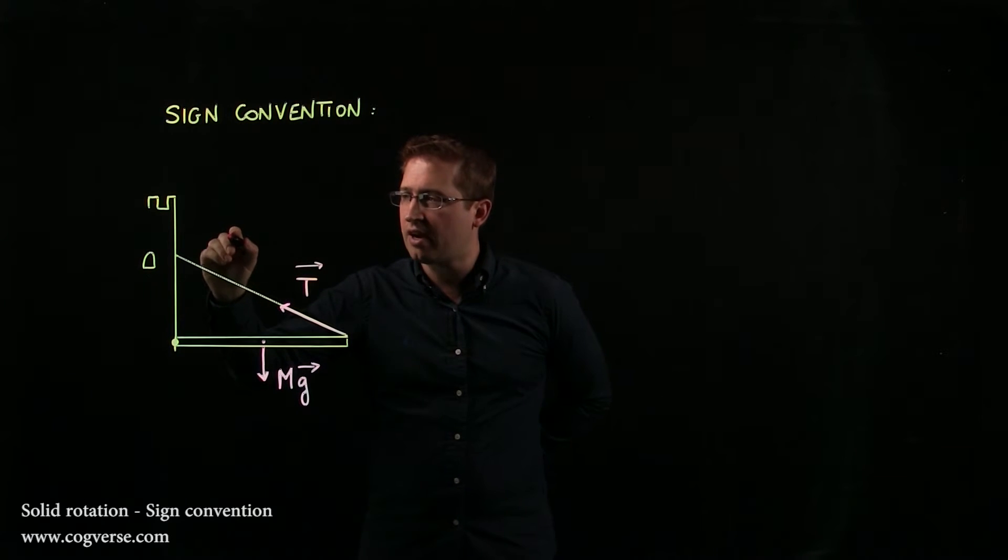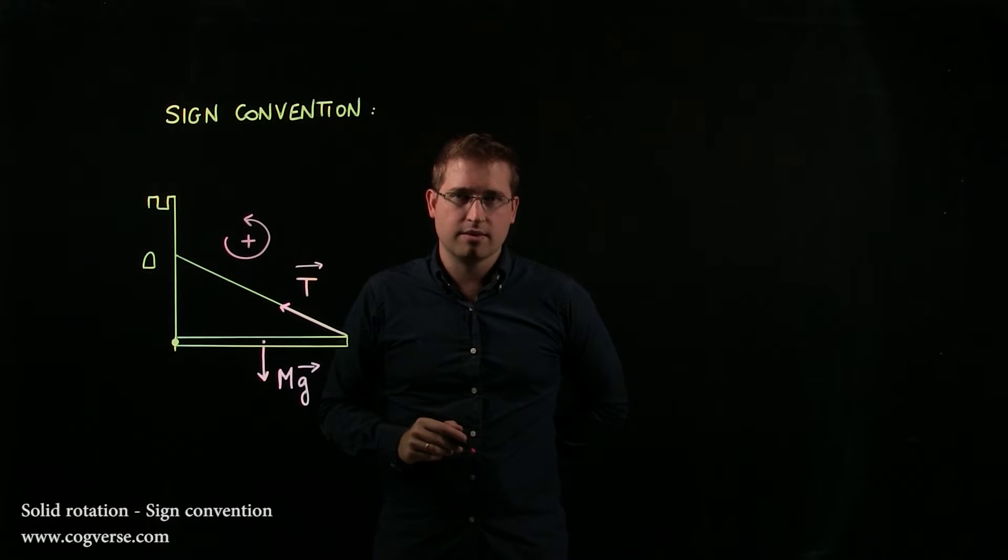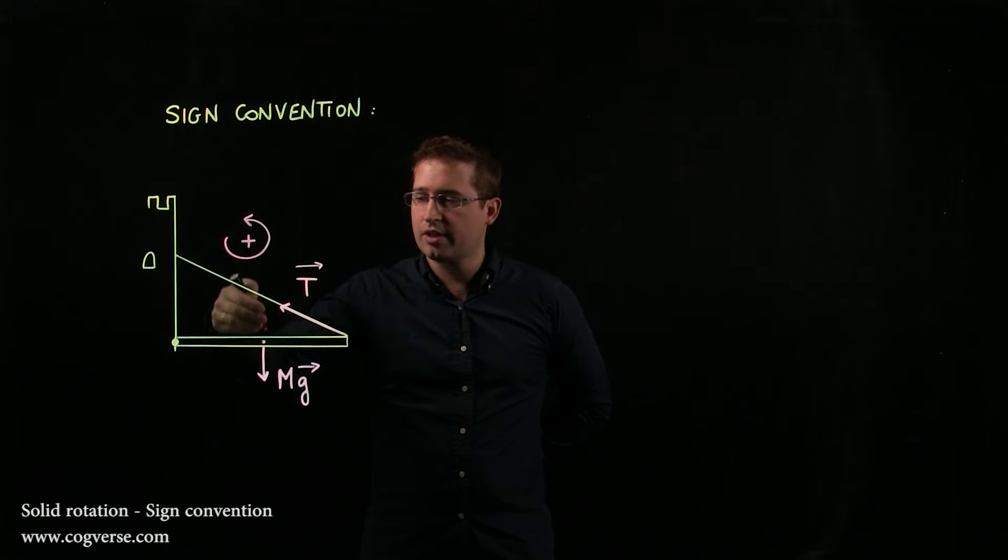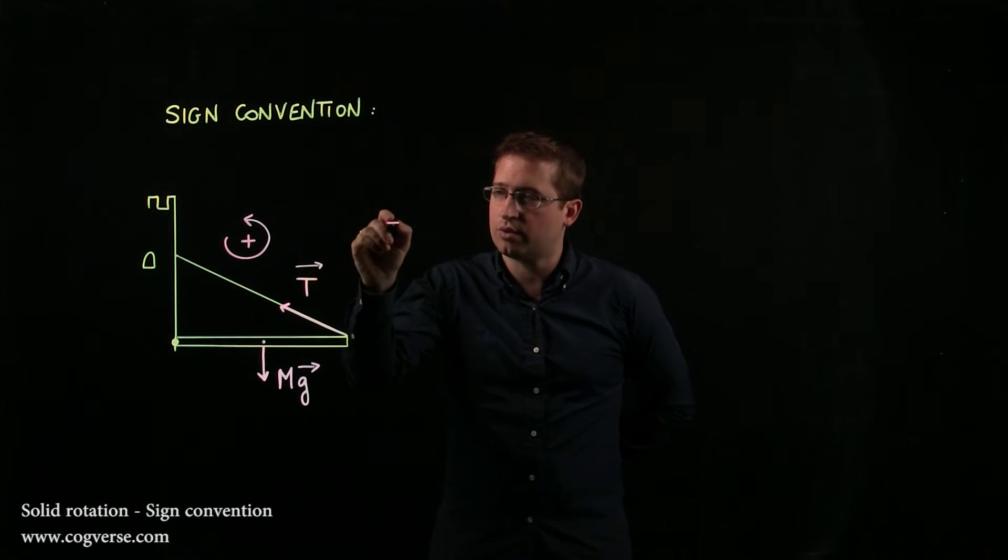In other words, we define positive rotation like this and T is trying to rotate the drawbridge like this. If it could rotate it, it would, and that's how it would do it.